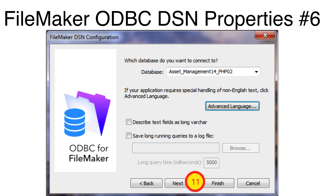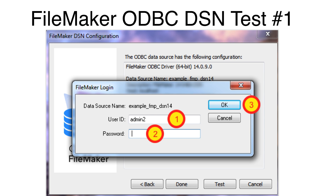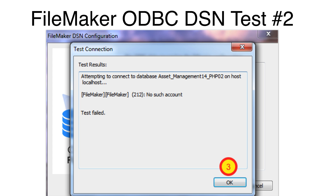Click the Next button, then click the Test button. Enter the login username and password if there is one, and click the OK button. If the test fails, double check the login account name and password. Make sure that you are logging in with an admin account having full access privileges. The login account must have the FMXDBC extended privilege, and the full access account already has this extended privilege.